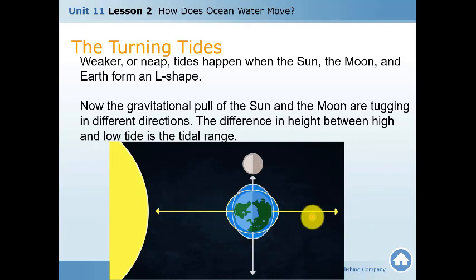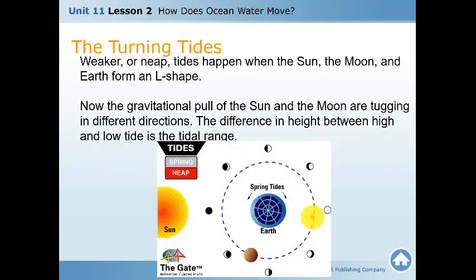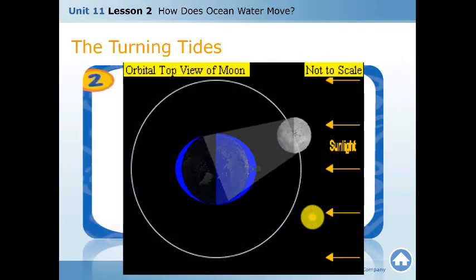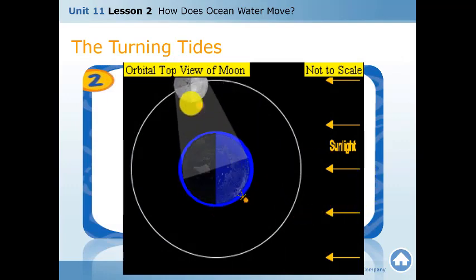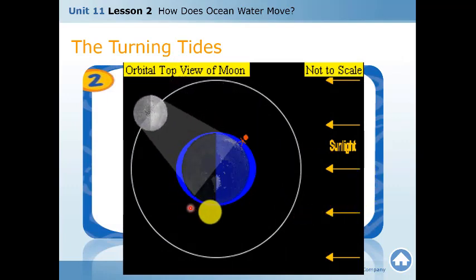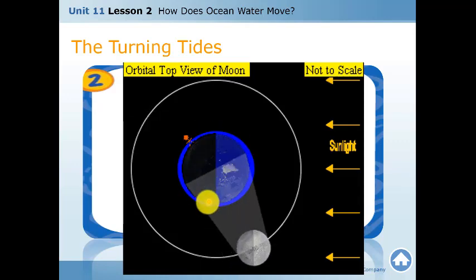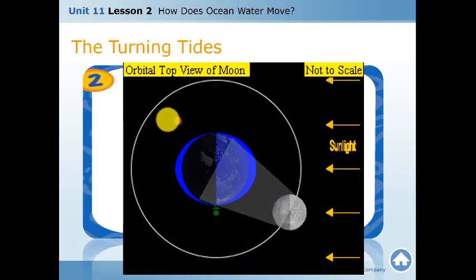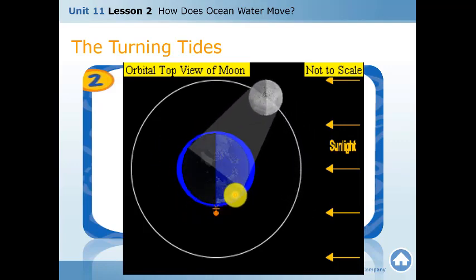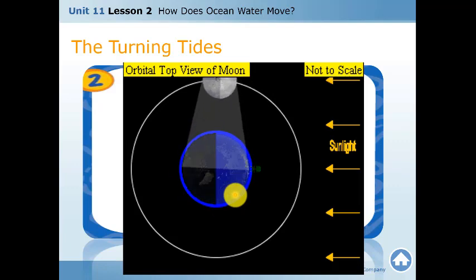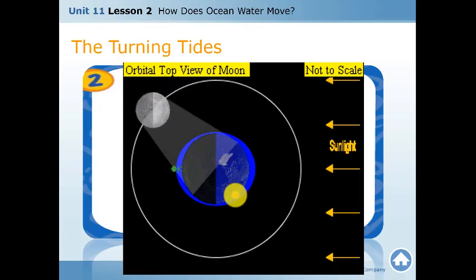We saw this picture before showing spring and neap tides. I hope you understand this lesson. This image shows how the sun and the moon affect the ocean, how the moon affects the water and the ocean, turning high tide and low tide.